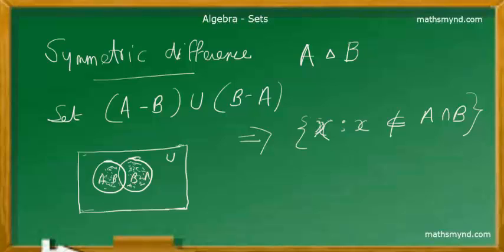It simply means that X is such that X is not an element of A intersection B. That's the meaning of it.